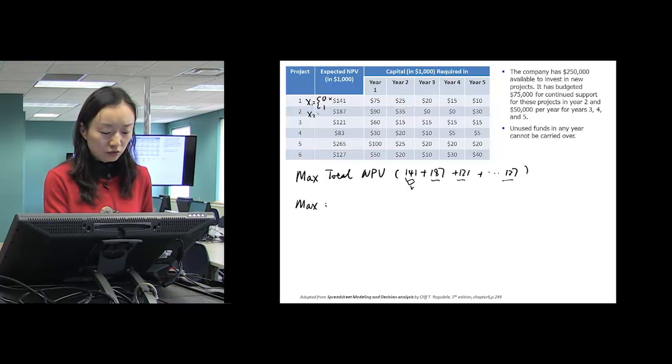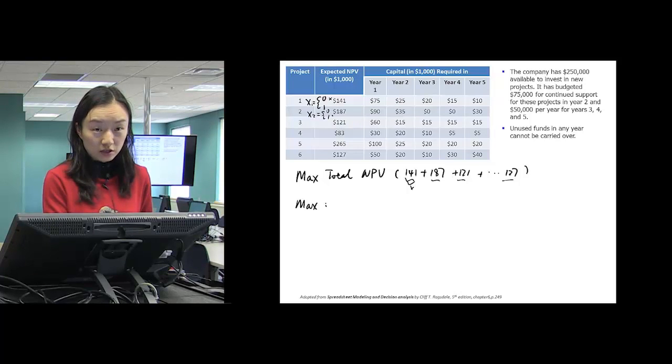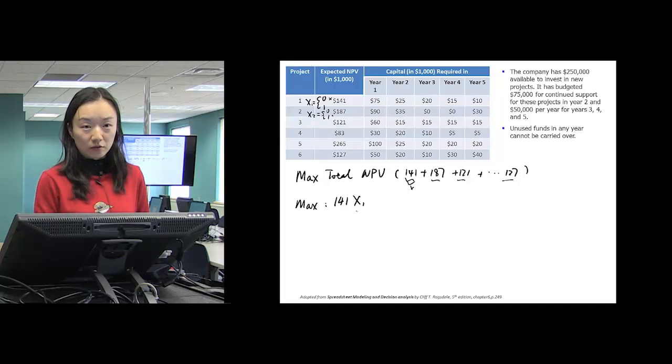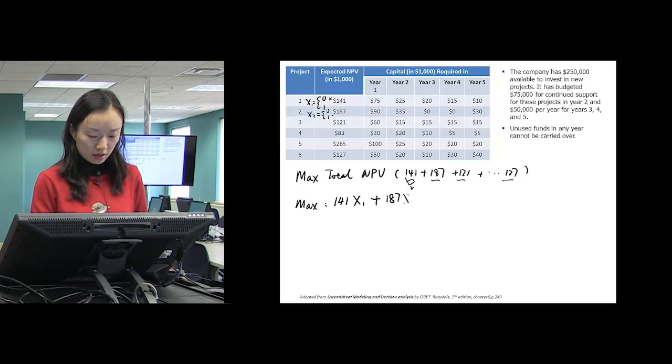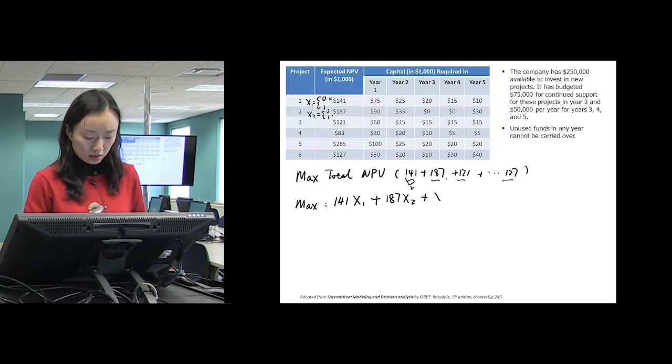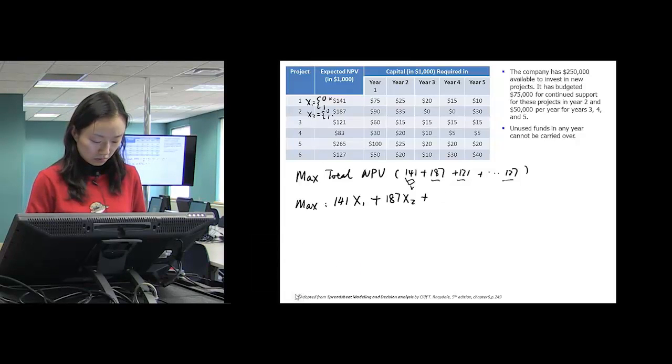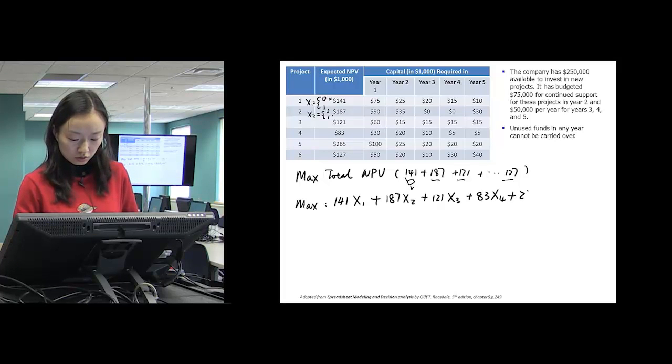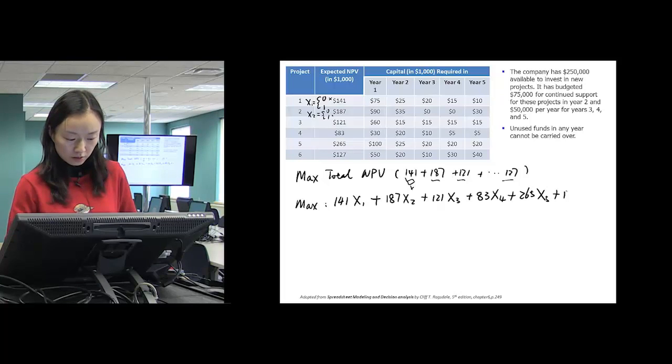Same for x2. If it is chosen, then 1 times this. If it's not chosen, then NPV will not be included. So, object function will be to maximize 141 times x1, keeping in mind that x1 will be a binary variable, will be binary value 0 or 1. Plus 187×x2, plus 121×x3, plus 83×x4, plus 265×x5, plus 127×x6.